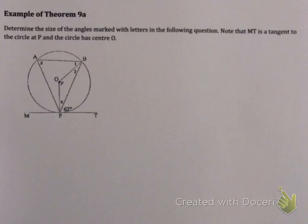This says, determine the size of the angles marked with the letters in the following question. Notice that MT is a tangent, which sets up all kinds of alarm bells. And this has a circle center. So in terms of circle center, I start thinking radii. I start thinking angle at centers, twice angle at circumference.